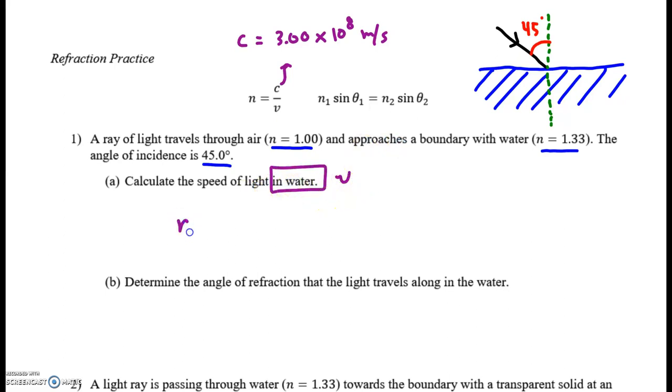So find speed of light. Well, I'm going to use this formula. Why do I use this formula? Well, I've got the refractive index. Oh, hang on. Let me be very, very careful here. If we want to know the refractive index of water, the denominator better be the speed of light in water.